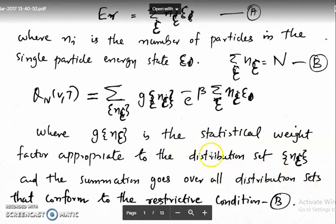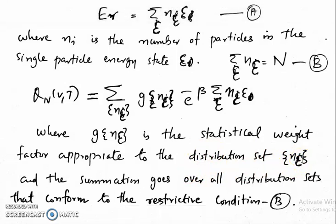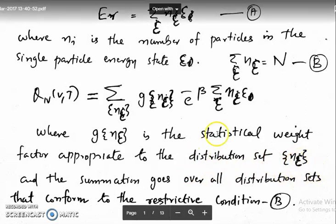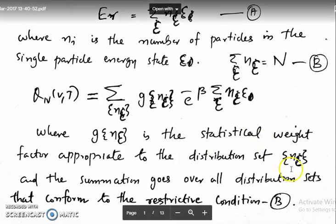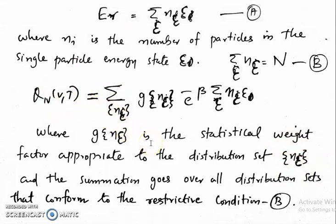n_epsilon is the distribution set — it tells you how many particles are there in each single particle state. Instead of n_i, we are now using n_epsilon, where n_epsilon is a distribution set. It tells you how many particles are there in the first single particle state, in the second single particle state, and so on. This is actually a set of numbers. We are summing over the different distribution sets of the single particle numbers.